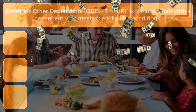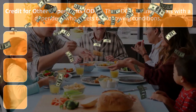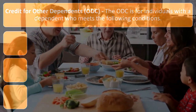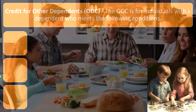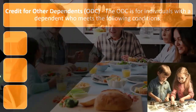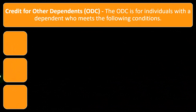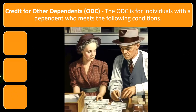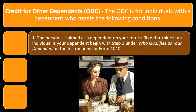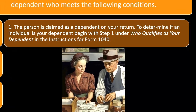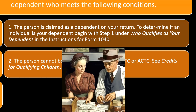The ODC other dependent credit: the strategy is — you have a dependent, they possibly qualify as a dependent, and then the question is whether they qualify for the child tax credit. If not, then you look at the other dependent credit, which is less but still beneficial. The ODC is for individuals with a dependent who meets the following conditions: one, the person is claimed as a dependent on your return; and two, the person cannot be used by you to claim the CTC or ACTC. To determine if an individual is your dependent, begin with step one under 'who qualifies as your dependent' in the instructions for Form 1040 on the IRS website.